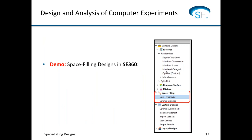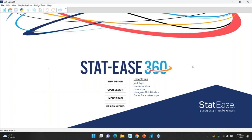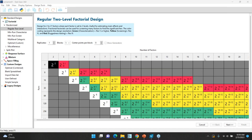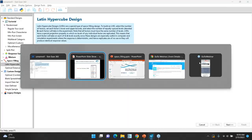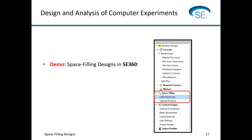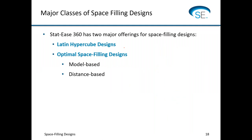If you're doing space filling designs in Statis 360, we have a separate category in our software. You'll see space filling right there, with options for Latin hypercube or optimal designs. Statis 360 has two major offerings: the classical Latin hypercube designs, and optimal space filling designs — some model-based and some strictly distance-based. We'll go through all of these cases.